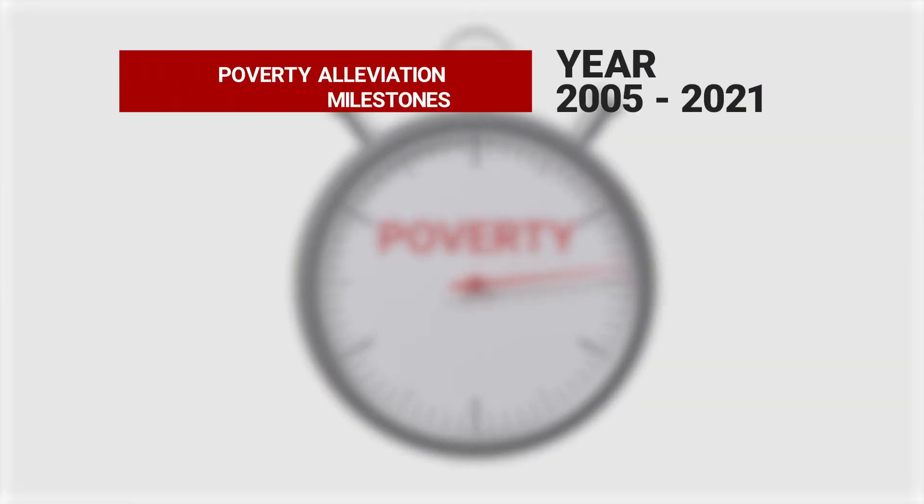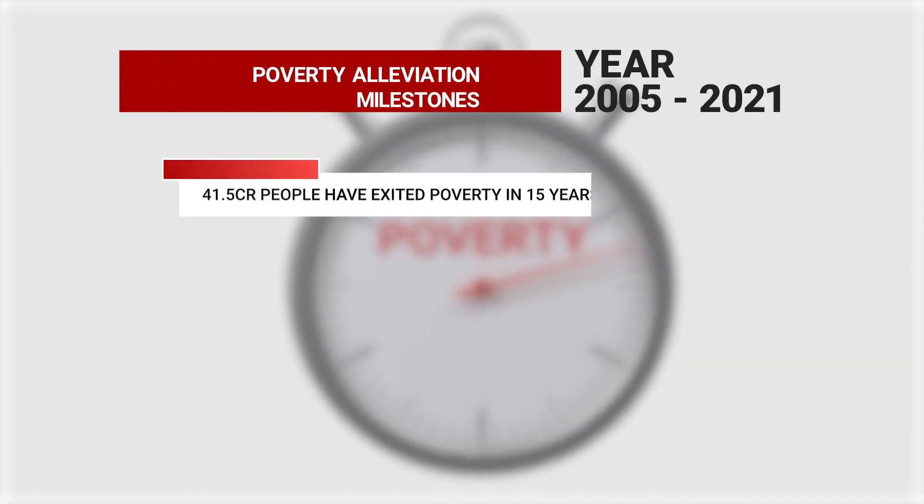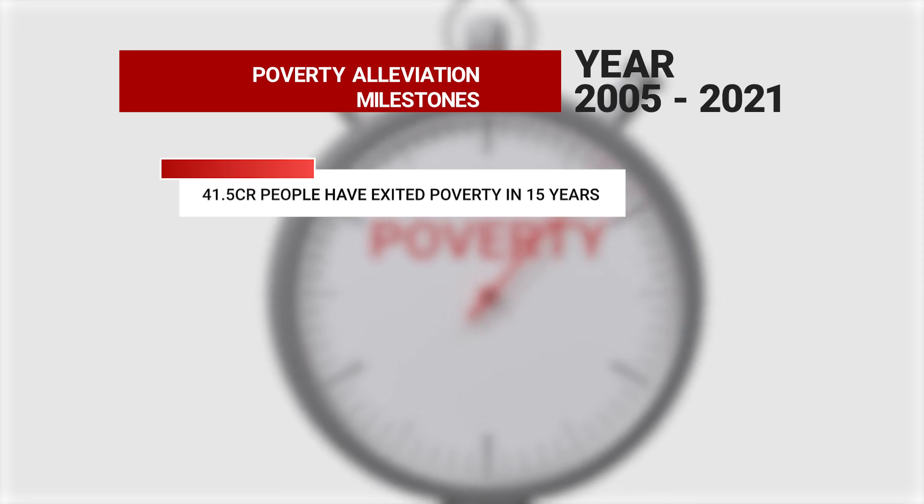The first point is on poverty elevation milestones that India has achieved. Let's put out the period of study very clearly: 2005 to 2021, so about a 15-year period. 41.5 crore people exited poverty in 15 years. The figure for 5 years is 13.5 crore people exited poverty. Remember, India's population today is 140 crores. So when we say 13.5 crore people have exited poverty, look at the percentage of total population that we are talking about as well.